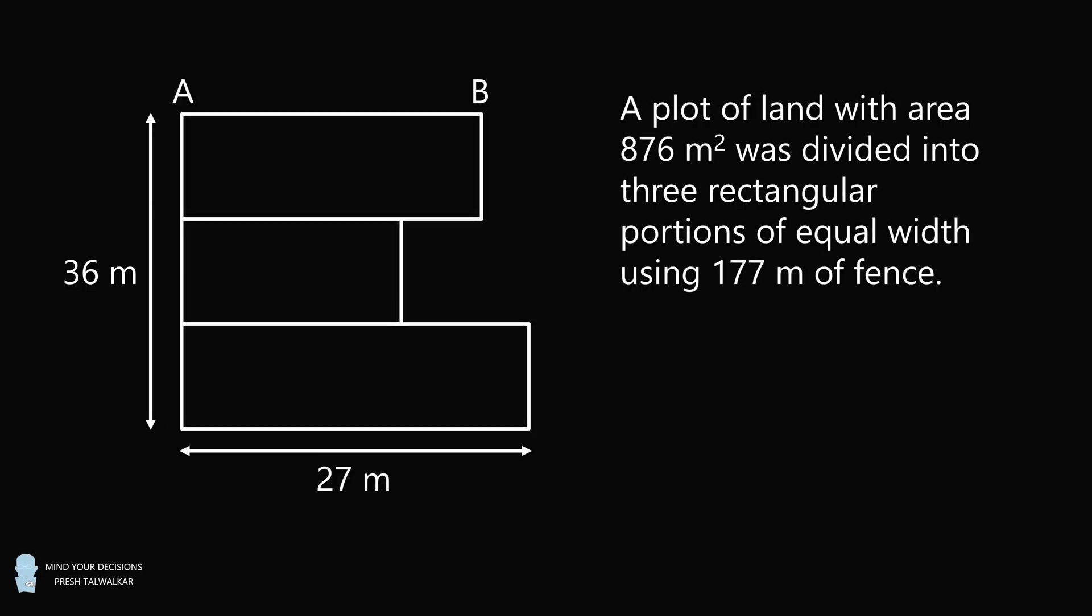Hey, this is Presh Talwalker. A plot of land with area 876 square meters was divided into three rectangular portions of equal width using 177 meters of fence as shown.